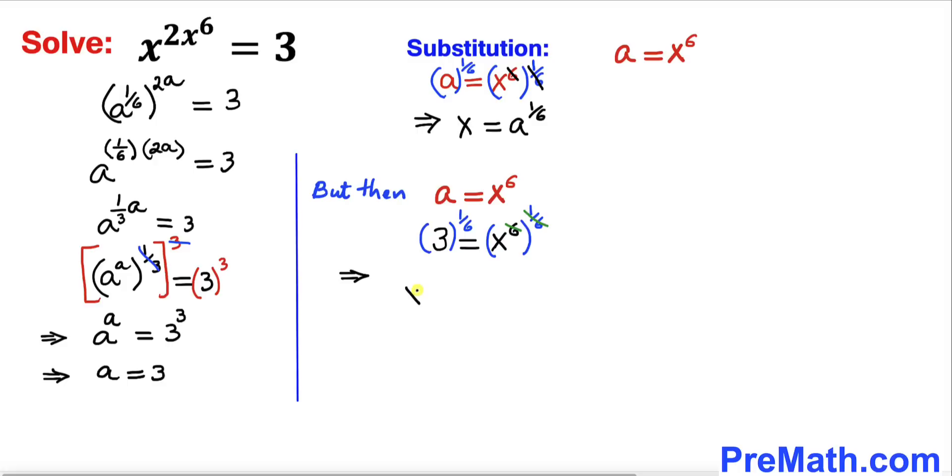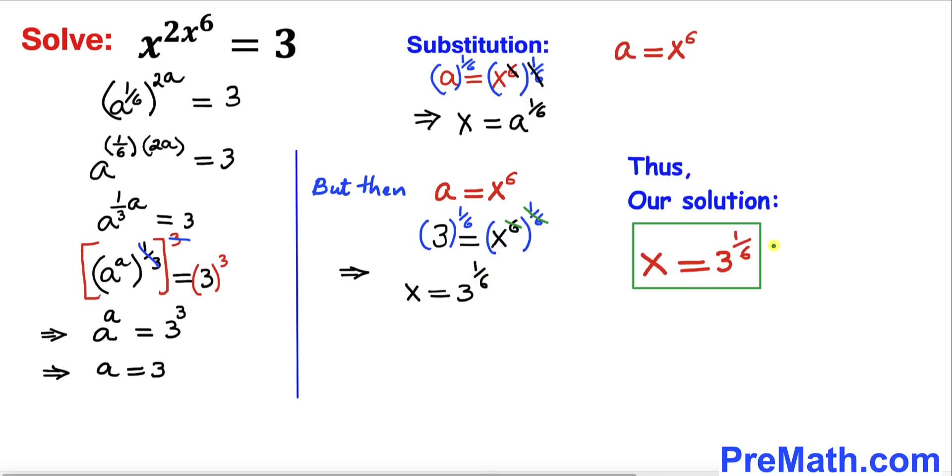So therefore we can write x equal to 3 power 1 over 6. So thus our solution turns out to be 3 power 1 over 6. That can also be written as 6 root of 3.